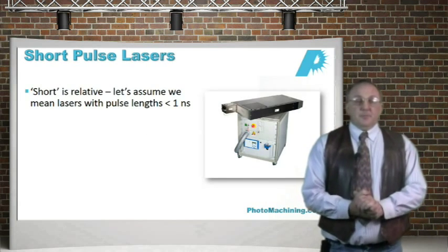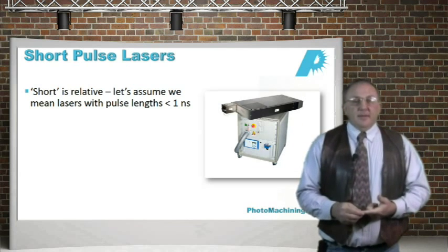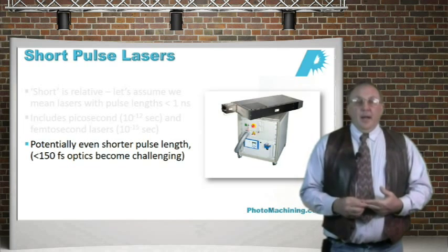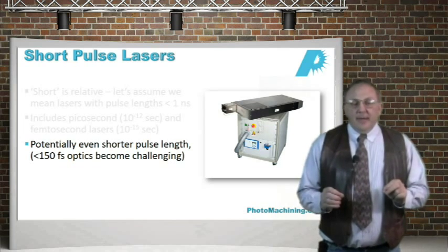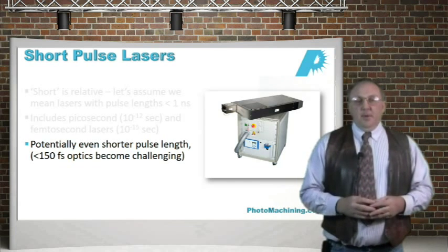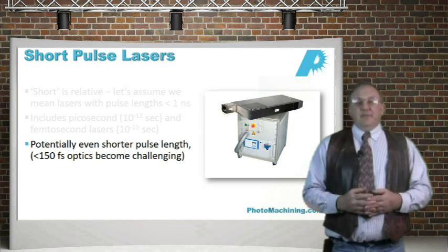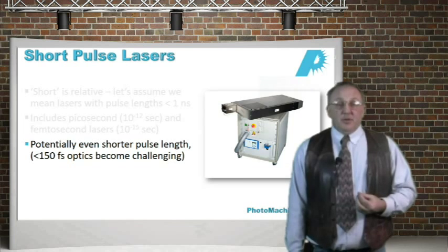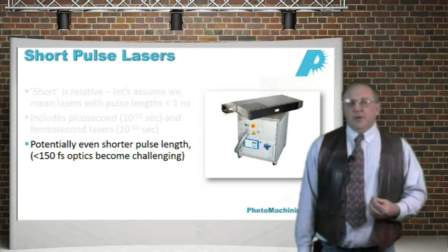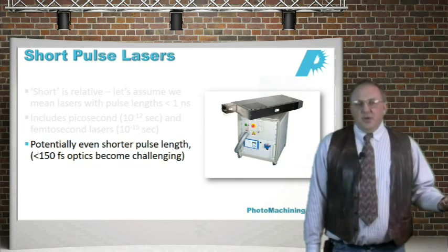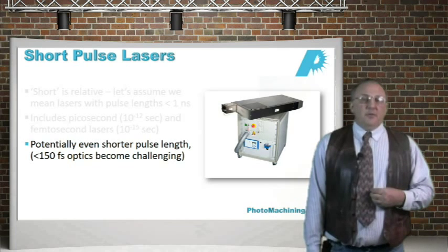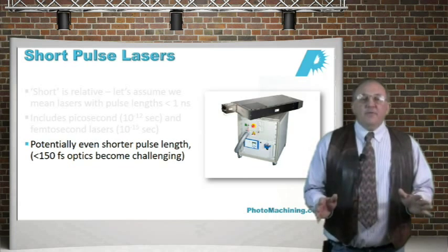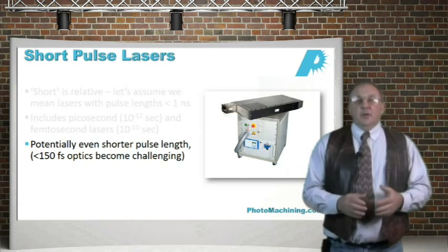Let's get into ultra-short pulse lasers. 'Short' is a relative term, so let's define it as pulse lengths less than one nanosecond, which includes picosecond and femtosecond lasers. There are potentially applications for even shorter pulses, but the optics become very difficult to deal with below about 150 femtoseconds. Even though 10 femtosecond lasers are commercially available, there generally doesn't seem to be any advantage in going to that short a pulse length because of optics problems, and below about 150 femtoseconds you don't really gain anything in edge quality. So 150 femtoseconds is probably the practical lower limit.